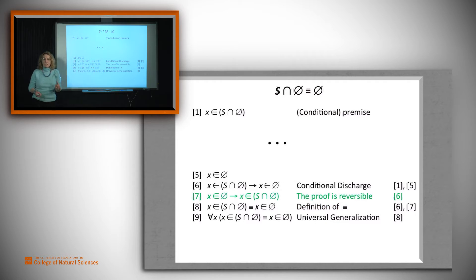Now let's use universal generalization to go from our arbitrary x has this property to all x must have this property.